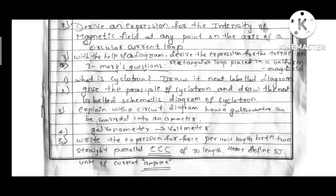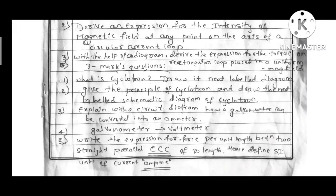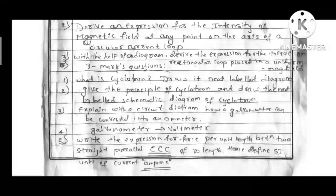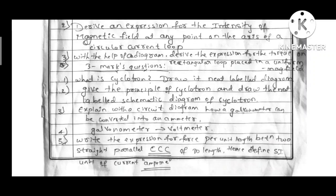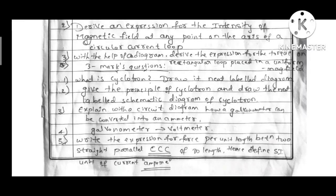With the help of diagram, derive the expression for the torque acting on a rectangular current carrying loop placed in a uniform magnetic field. This question is, what is cyclotron? Then we have to draw the diagram. Next question, give the principle of cyclotron and draw the neat label diagram.